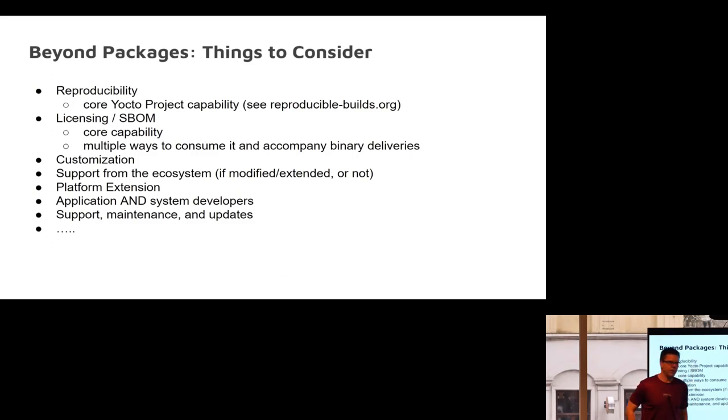Another thing when we talk binary distribution is it's more than just putting out a package feed. Reproducibility is important. Will those binary packages look the same when built in five years, ten years, different hosts? It matters if you want to be able to support it. The licensing and SBOM: just because you're giving somebody a binary package doesn't mean you don't need to also supply all the licensing and information around it. There are multiple ways you can deliver it. It can be there, not be there, be there on request.